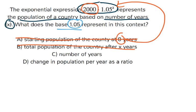C, number of years. Well, actually, x is the number of years, as said here in the word problem. So that's not right.